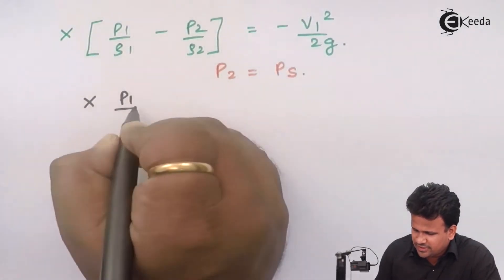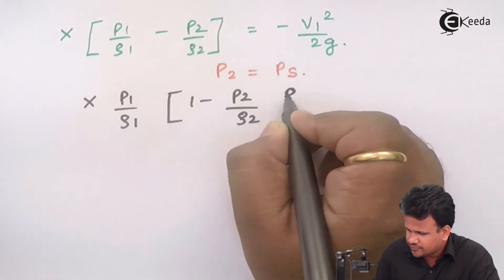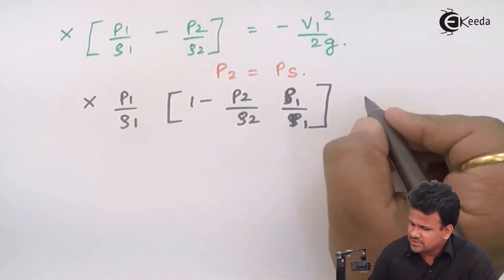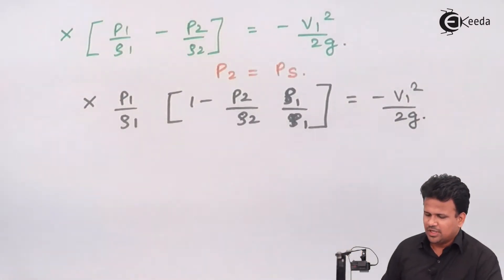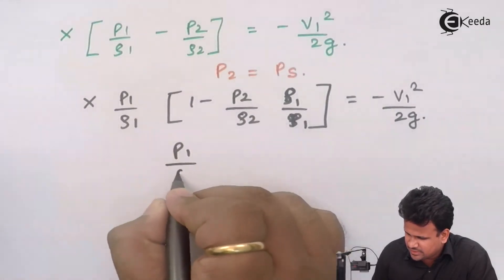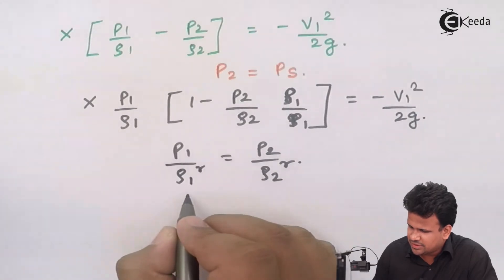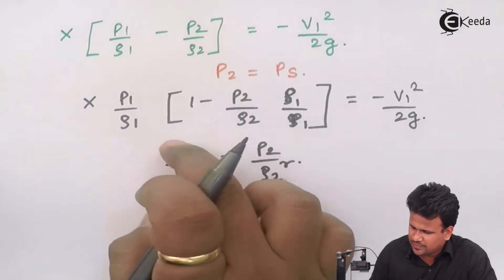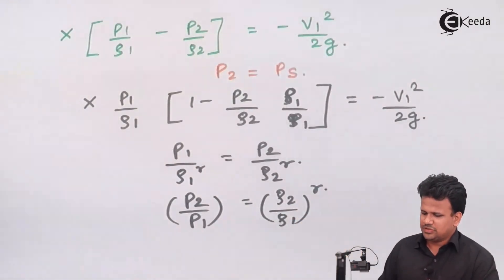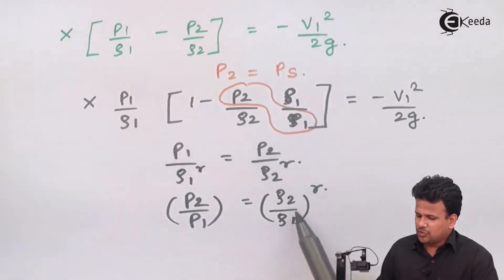Factoring out p₁/ρ₁, the equation becomes: x · p₁/ρ₁ · (1 − p₂/p₁ · ρ₁/ρ₂) = −v₁²/2g. Since it is an adiabatic process, we know that p₁/ρ₁^γ = p₂/ρ₂^γ, which gives p₂/p₁ = (ρ₂/ρ₁)^γ. Therefore ρ₂/ρ₁ = (p₂/p₁)^(1/γ), and ρ₁/ρ₂ = (p₁/p₂)^(1/γ) = (p₂/p₁)^(−1/γ).